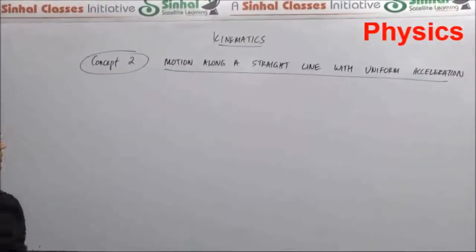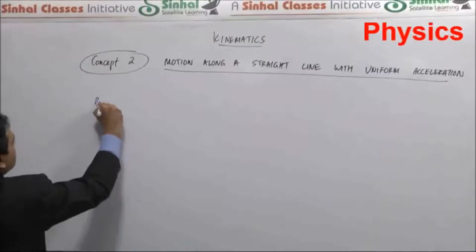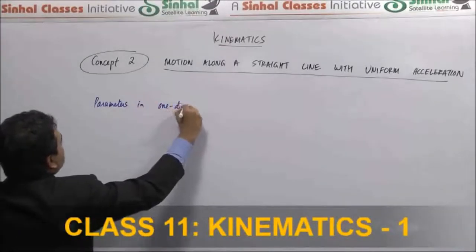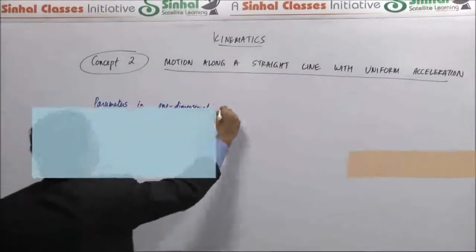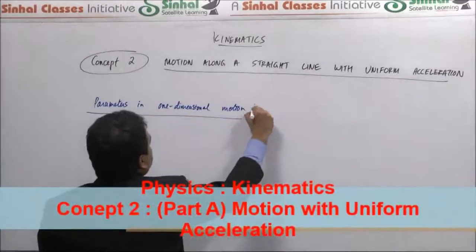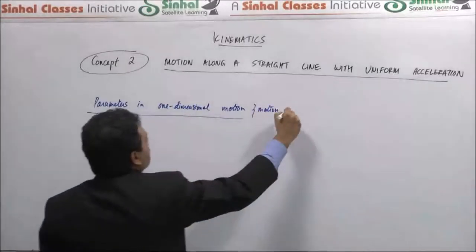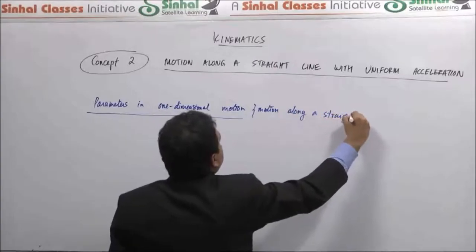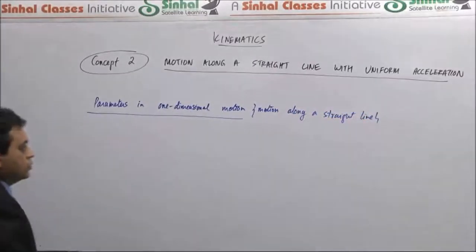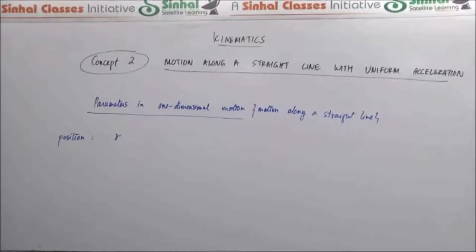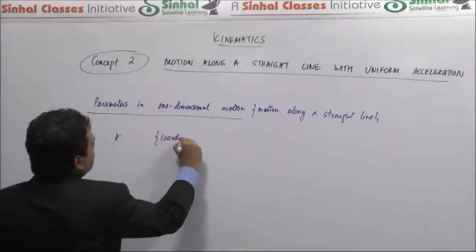Let us look at the parameters in one-dimensional motion. For motion along a straight line, we define position as just a coordinate instead of a vector — there is a single coordinate.